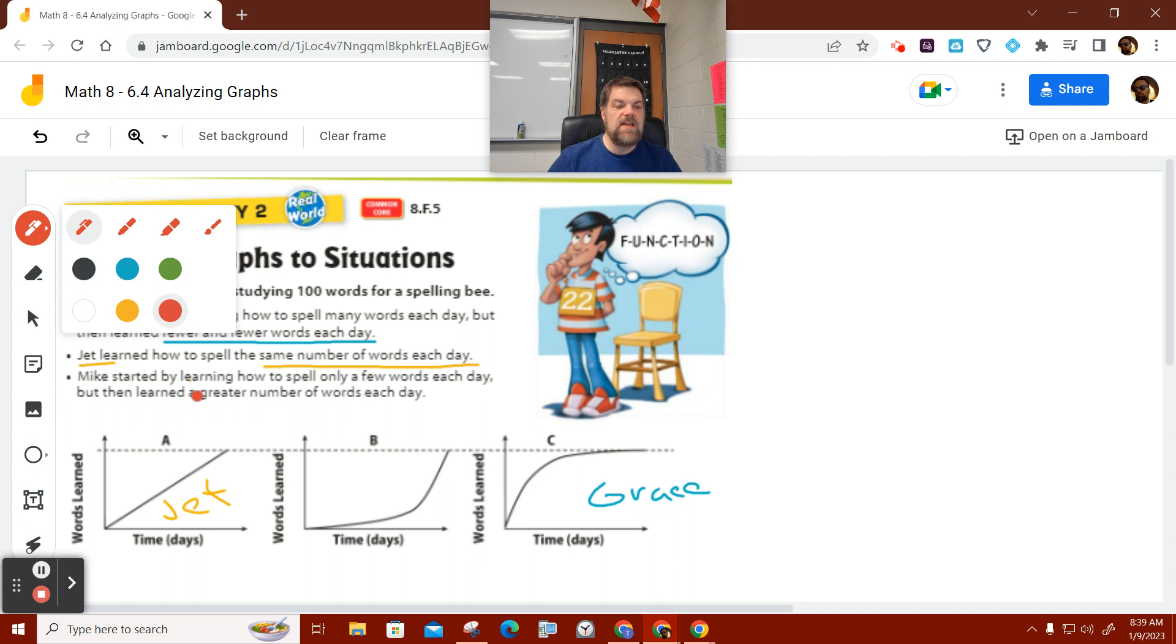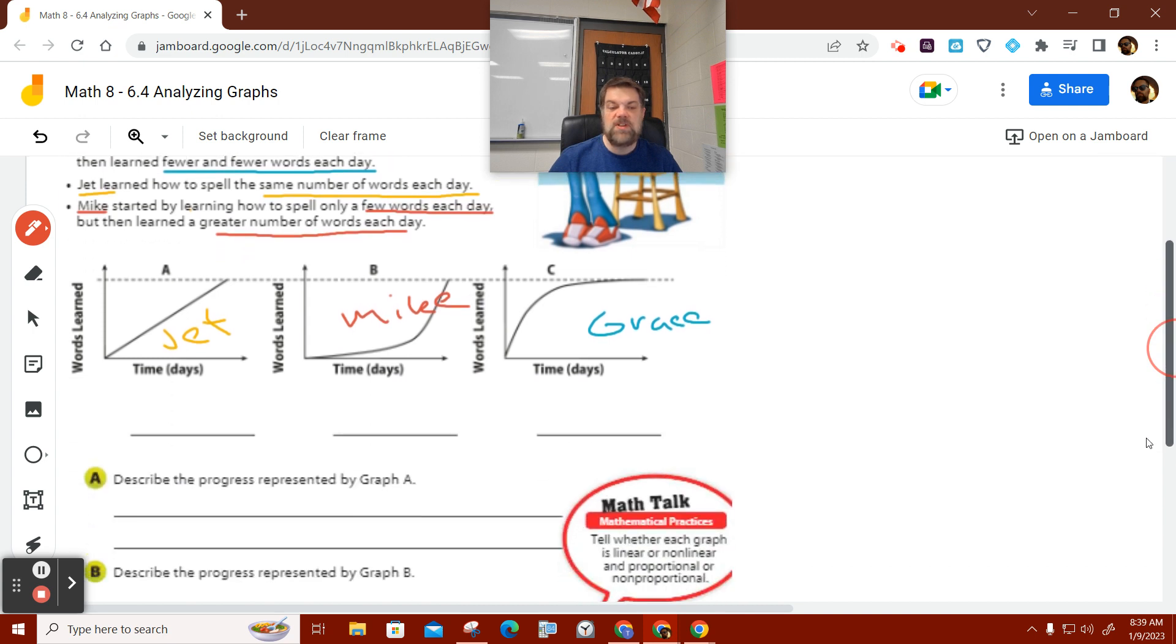And then Mike, he learned a greater number towards the end. He learned a few words in the beginning and then a greater number at the end. Yeah, it has to be B by default, but the graph makes sense when you look at it, right?